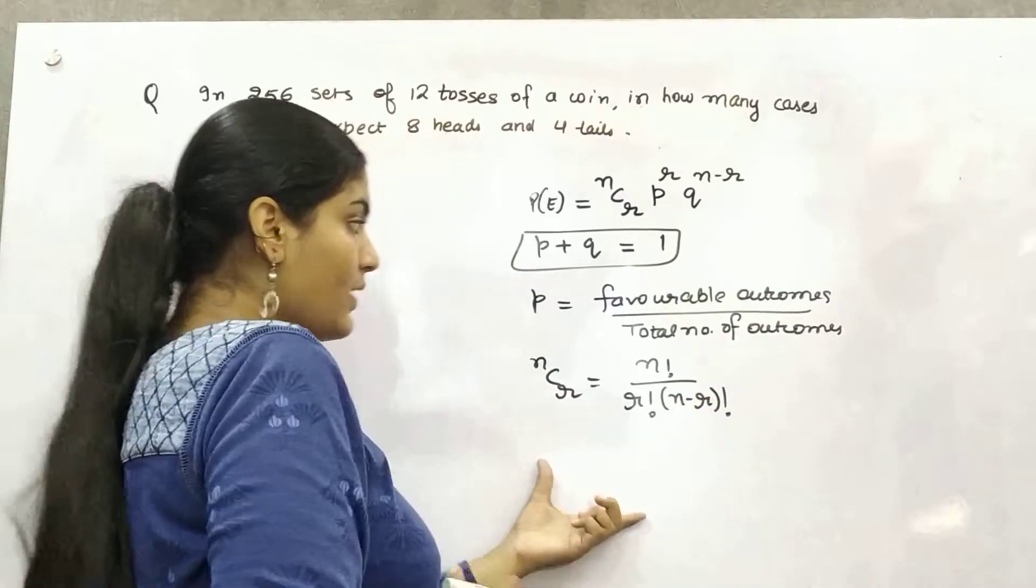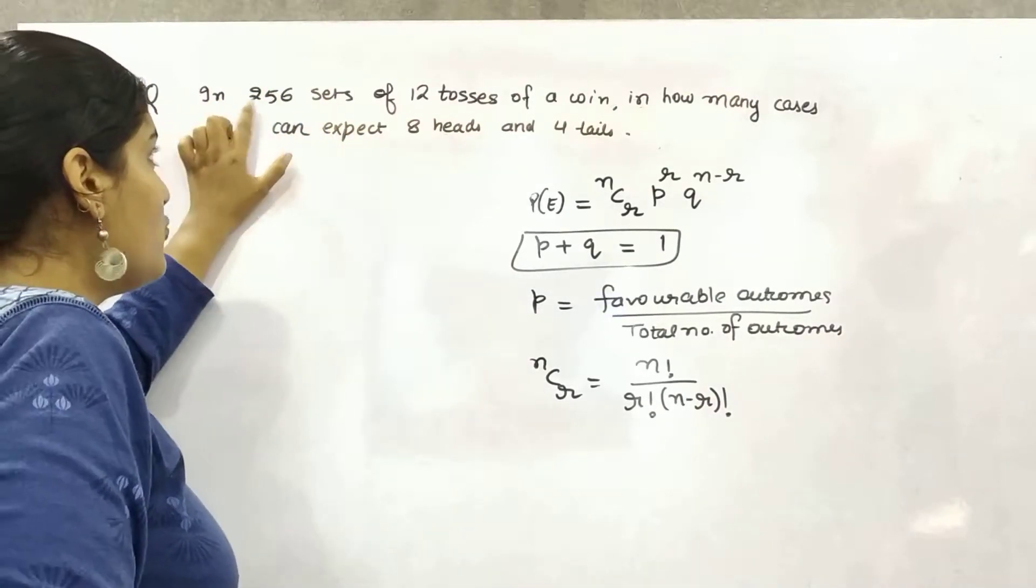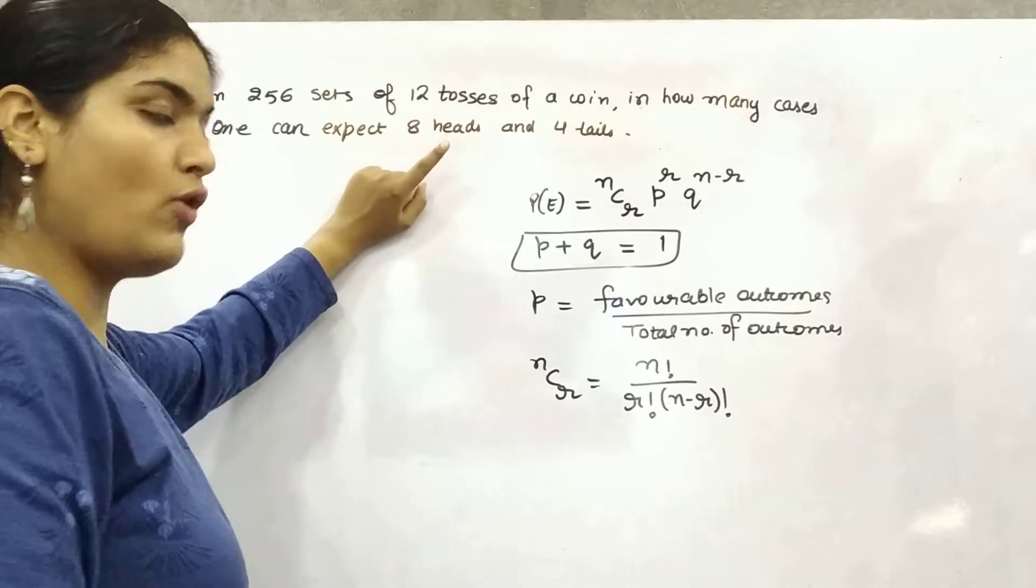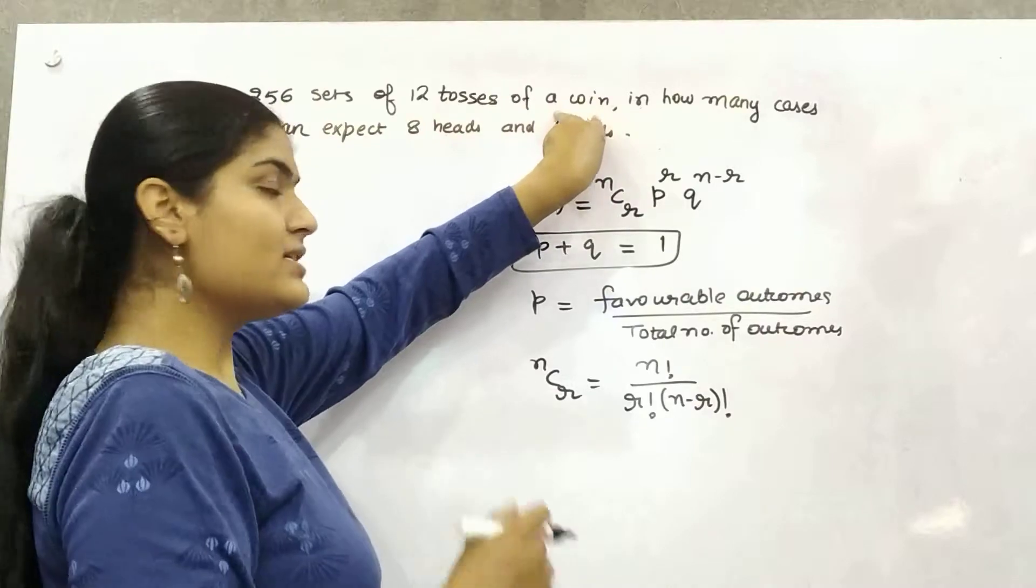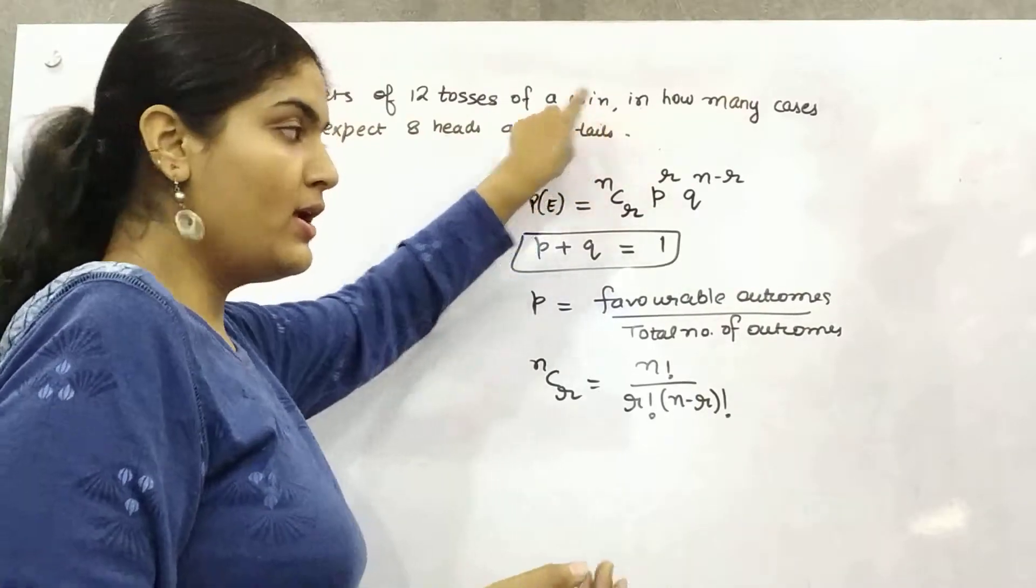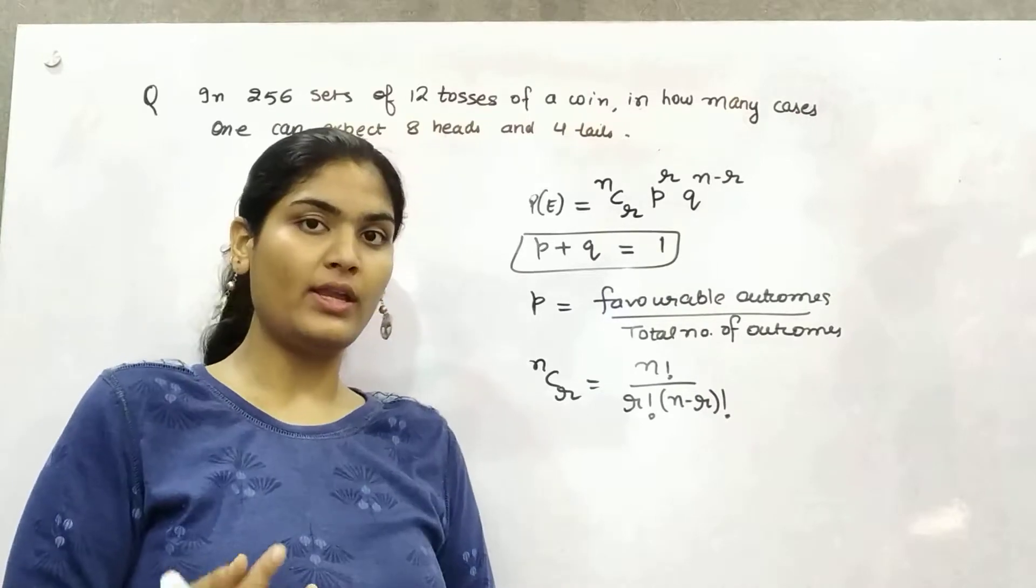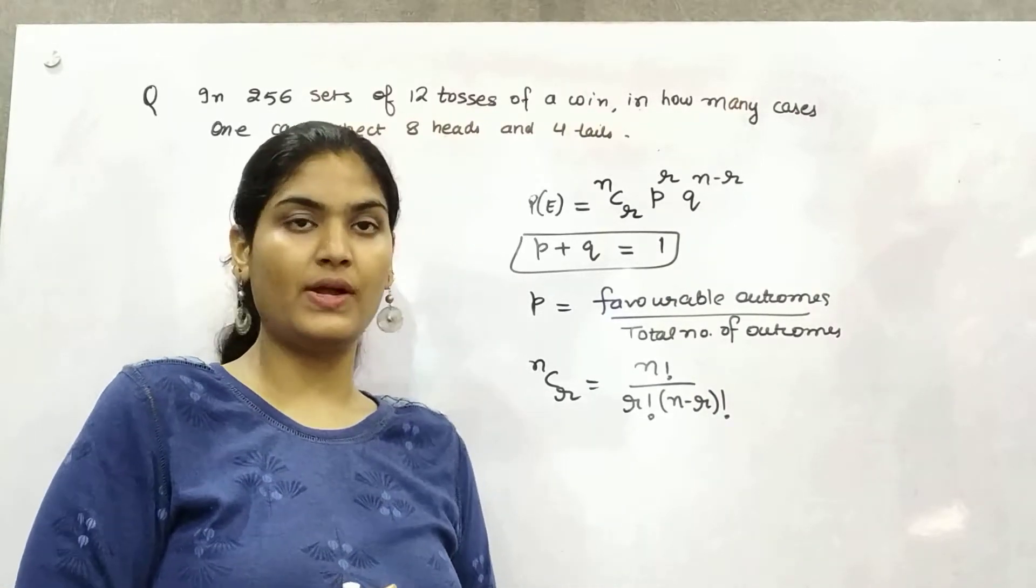So coming to this question, in 256 sets of 12 tosses of a coin. So 12 tosses. Your event is tossing a coin. So how many events you can get from it? So tossing a coin, there are two chances. Either you can get a tail or a head.